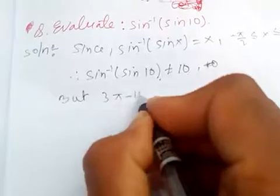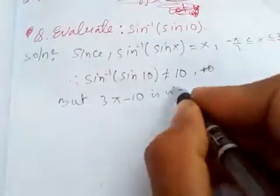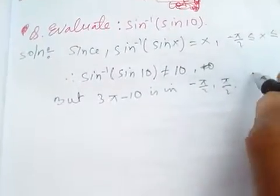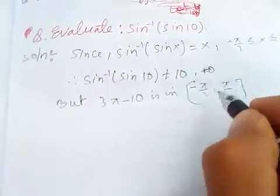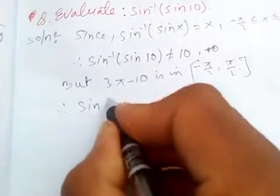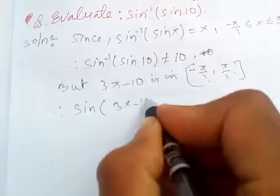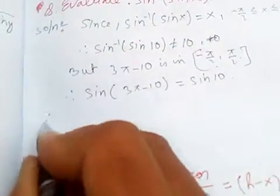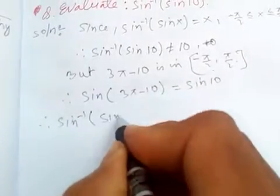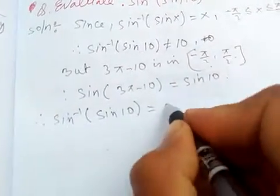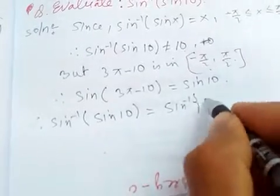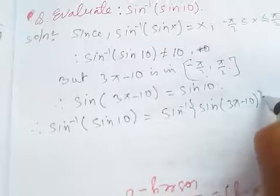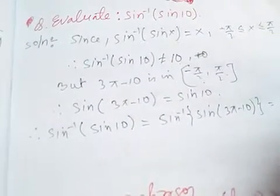But 3 pi minus 10 is in the interval minus pi by 2 and pi by 2. Therefore, sine of 3 pi minus 10 is equal to sine 10. So sine inverse of sine 10 equals sine inverse of sine of 3 pi minus 10, which equals 3 pi minus 10.